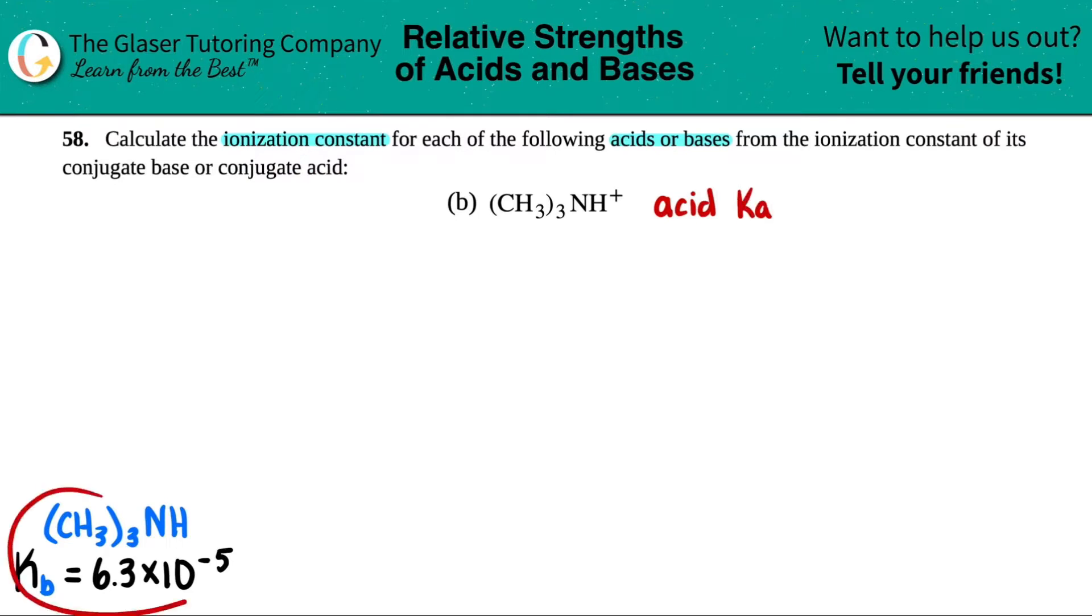So I went to the back of a textbook and I found the conjugate base for this. Actually, I did make a mistake here. There should be no H here because remember, your conjugate base always has one less hydrogen. So in essence, we should have stripped that hydrogen away and it's just an N. But the number is correct. The KB is 6.3 times 10 to the negative fifth.